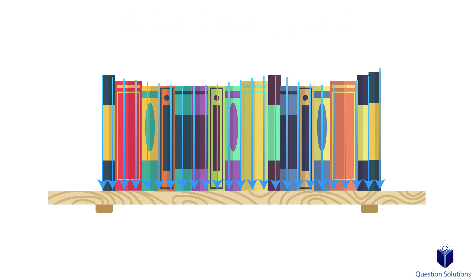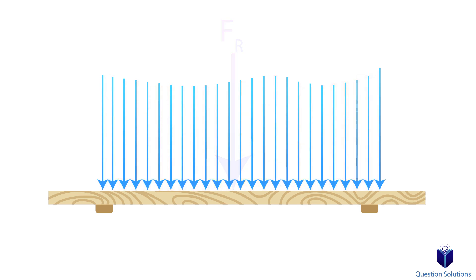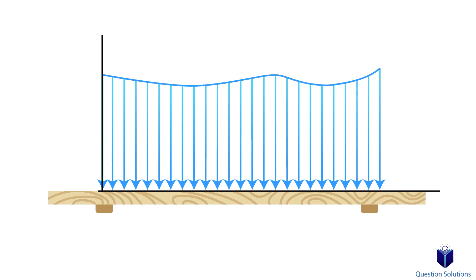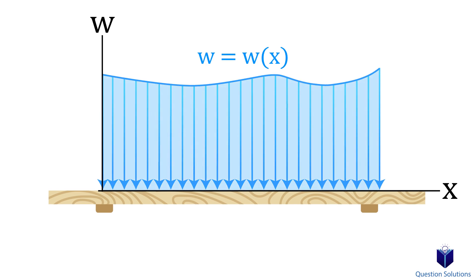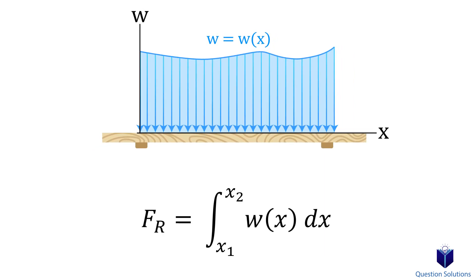So what we need to do is be able to represent a distributed load as a resultant force. Removing the books, we see a graph which represents the load. We can represent this graph with an equation — we will label it W. To find the resultant force, all we need to do is find the area under the graph; in other words, integrate it. The lower bound is where the distributed load starts from and the upper bound is where it ends.